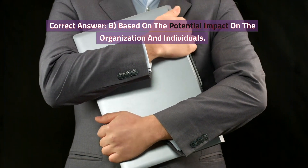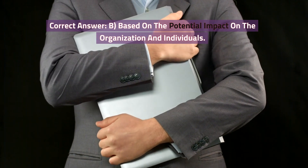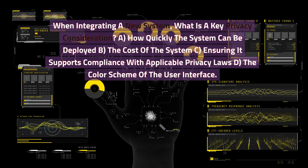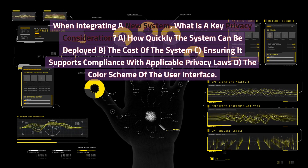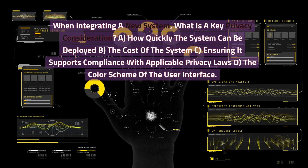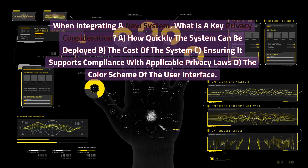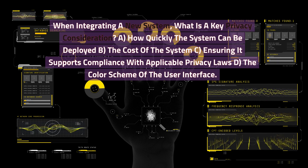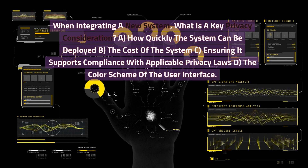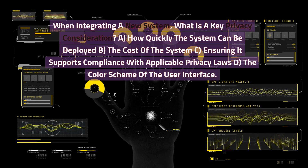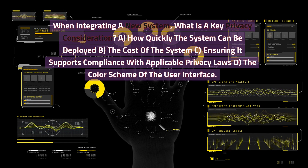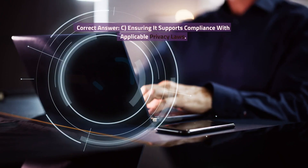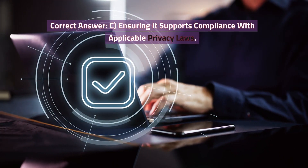When integrating a new system, what is a key privacy consideration? A. How quickly the system can be deployed. B. The cost of the system. C. Ensuring it supports compliance with applicable privacy laws. D. The color scheme of the user interface. Correct answer: C. Ensuring it supports compliance with applicable privacy laws.